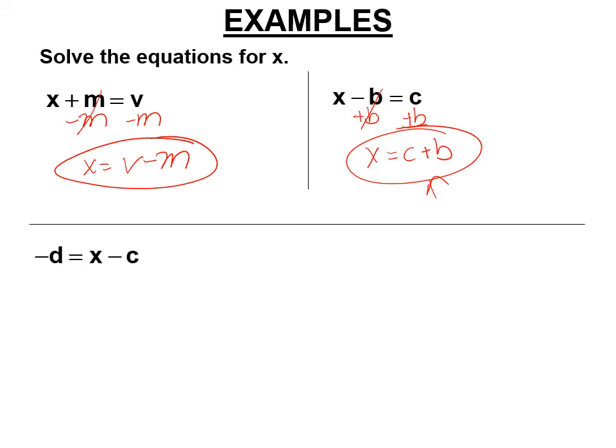The last one, x minus c equals negative d. So you still add c to both sides. And what do we get? We get negative d plus c equals x. Typically, we would turn that around to c minus d. But if you wrote for me, both of those are equivalent. You put the c first because alphabetical order, that's for expressions, not for equations. You can write either one.